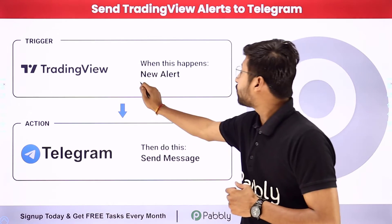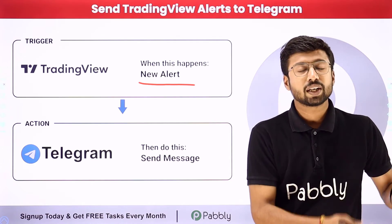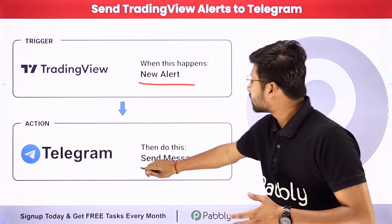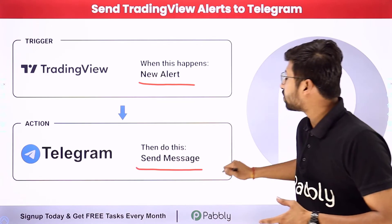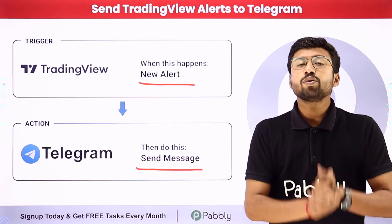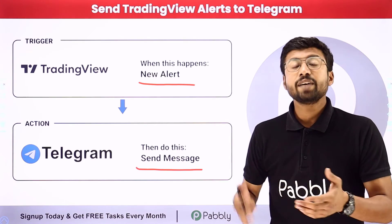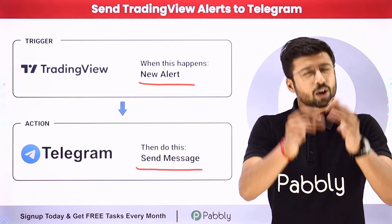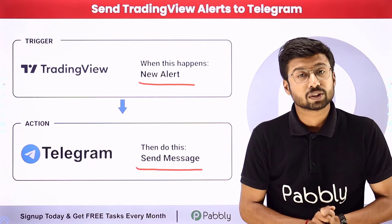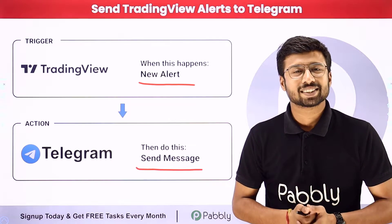In this automation, whenever we receive a new alert message in TradingView, automatically within seconds the same alert message will be sent on our Telegram channel as well. If you want, you can also send the same message to a Telegram group or an individual Telegram user. Now if you want to learn how you can set up this kind of automation all by yourself, just come with me to my screen.